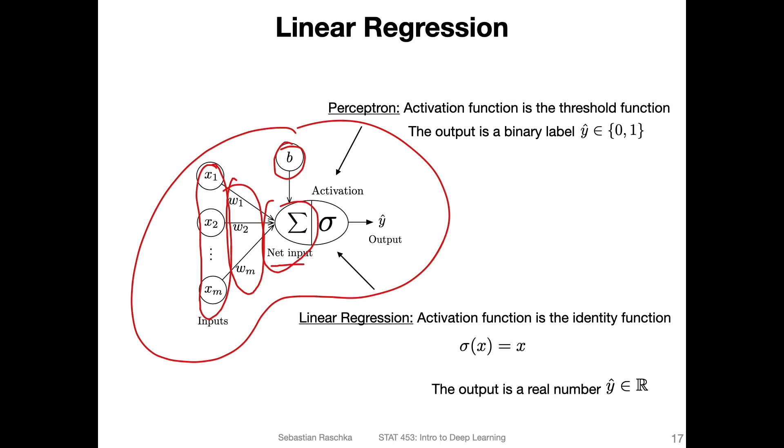In this general model, we have an activation function. In the case of the perceptron, this was the threshold function: if the net input z is greater than zero, then it returns one, otherwise it returns zero. That was our activation or threshold function.